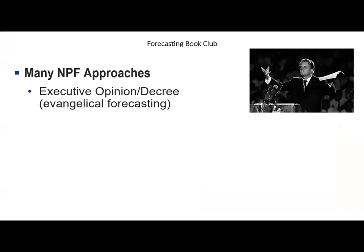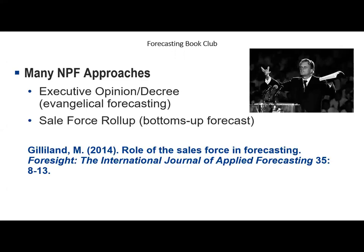Khan points out several new product forecasting approaches. Executive opinion — what I call evangelical forecasting — is where a top executive tells you the forecast based on what they want it to be, without regard to data or evidence. In my years as a forecasting practitioner in consumer products companies, I found this to be a very common approach. If the general manager didn't like what the forecasting department presented, they simply changed the forecast.